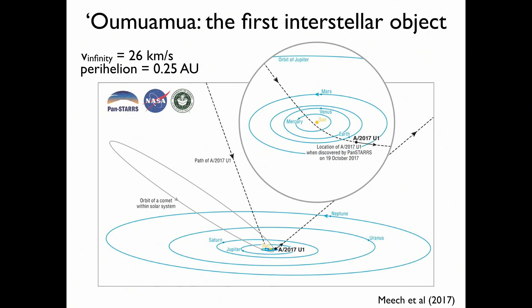Now Oumuamua is the first object that we found passing through our solar system. It came from outside, from interstellar space, passed very close to the sun inside the orbit of Mercury, and now is on its way back out.